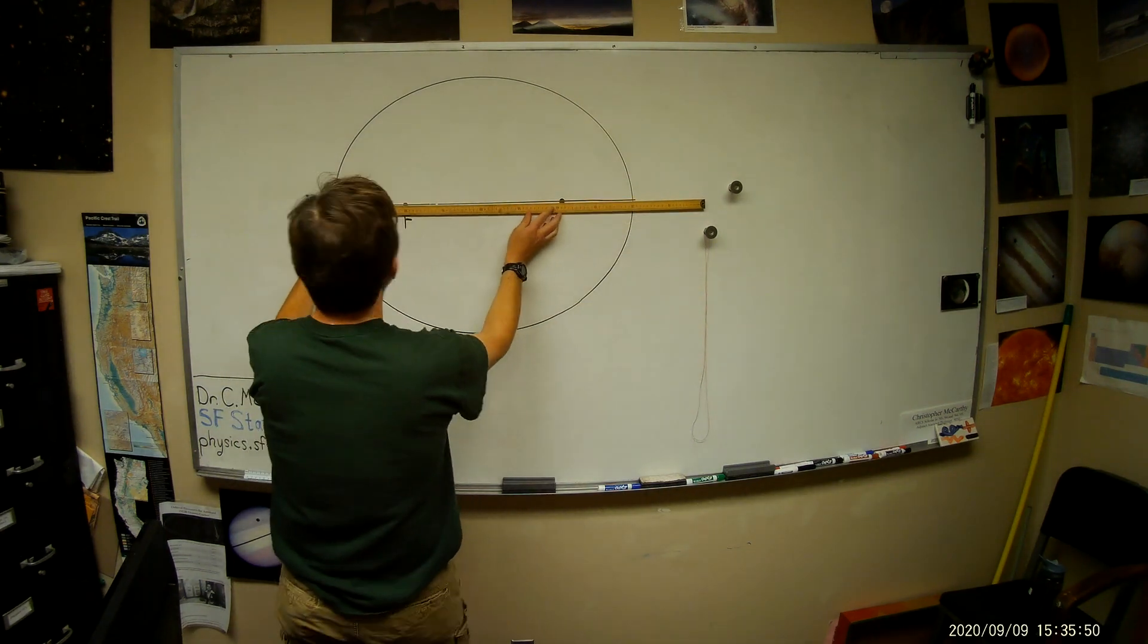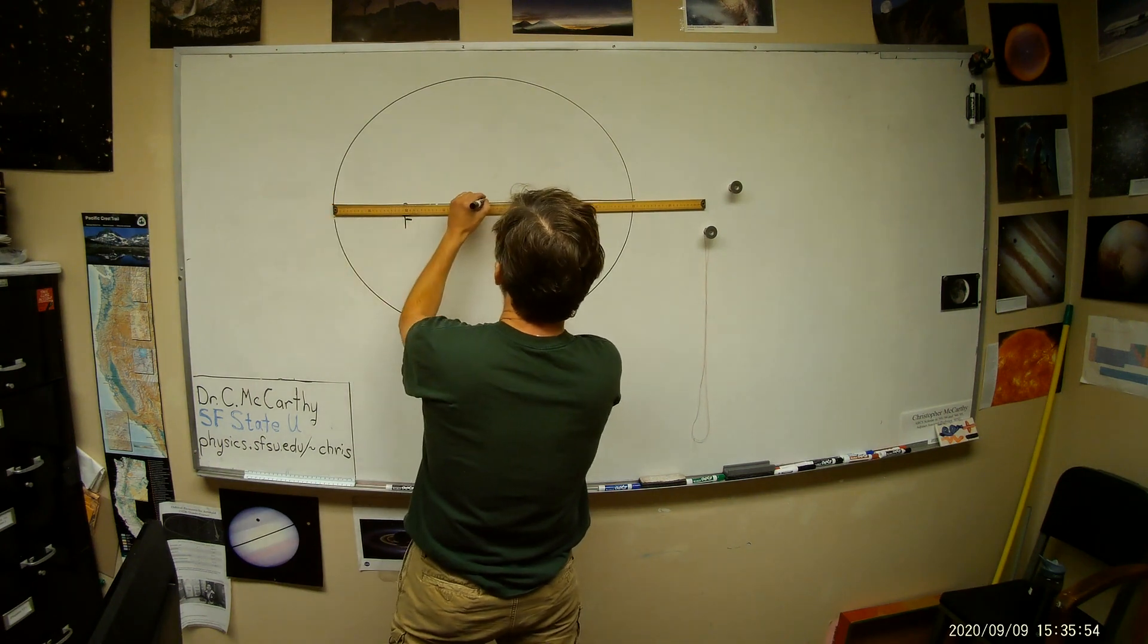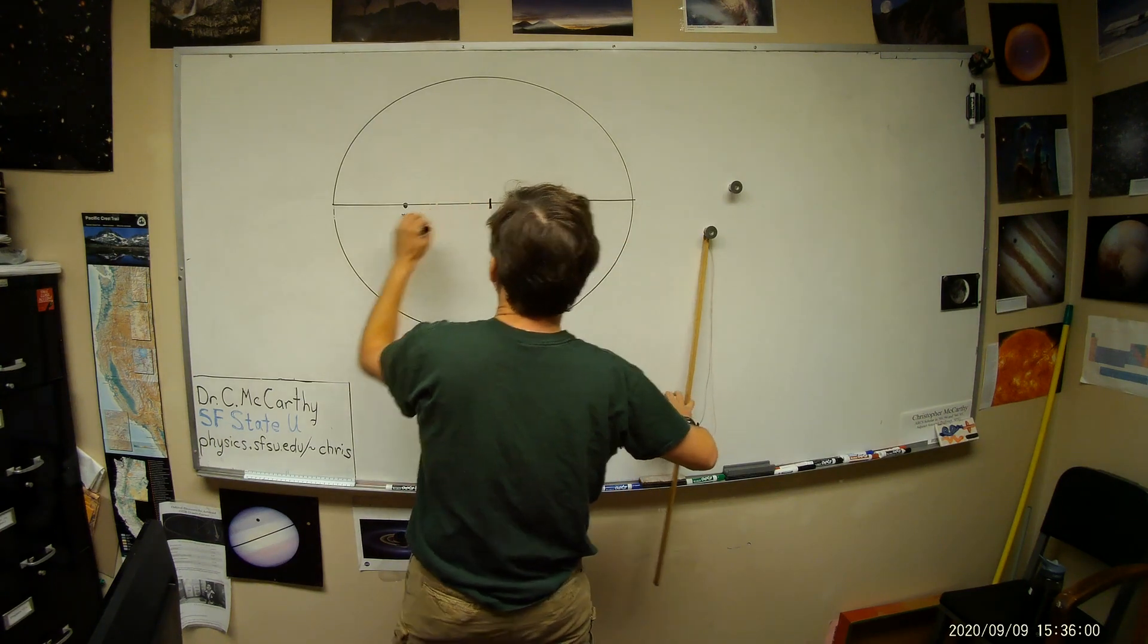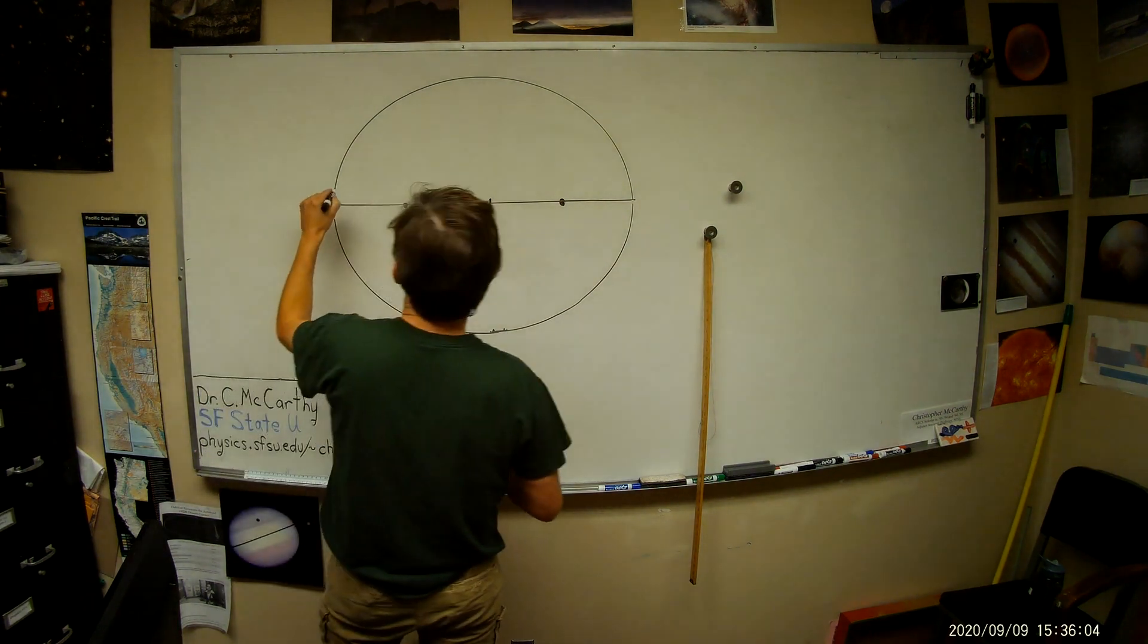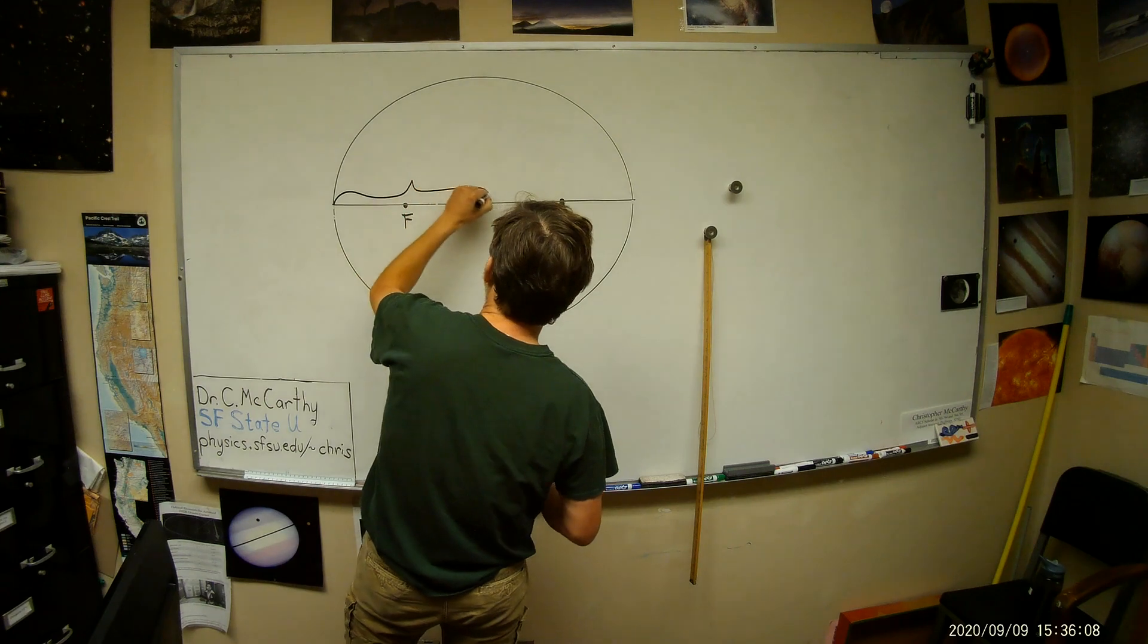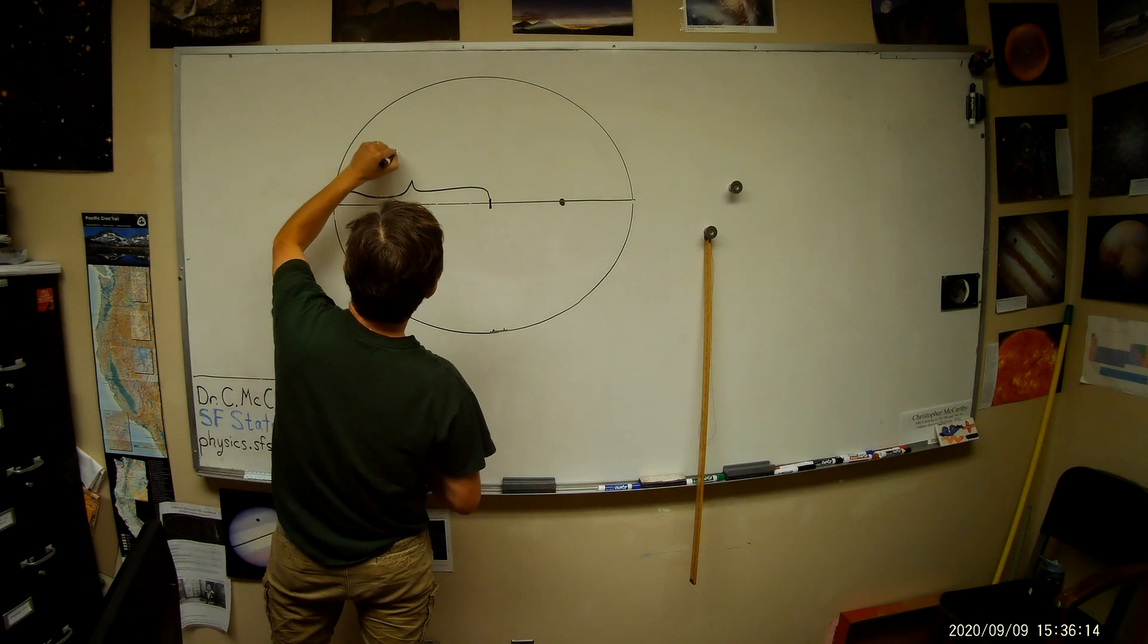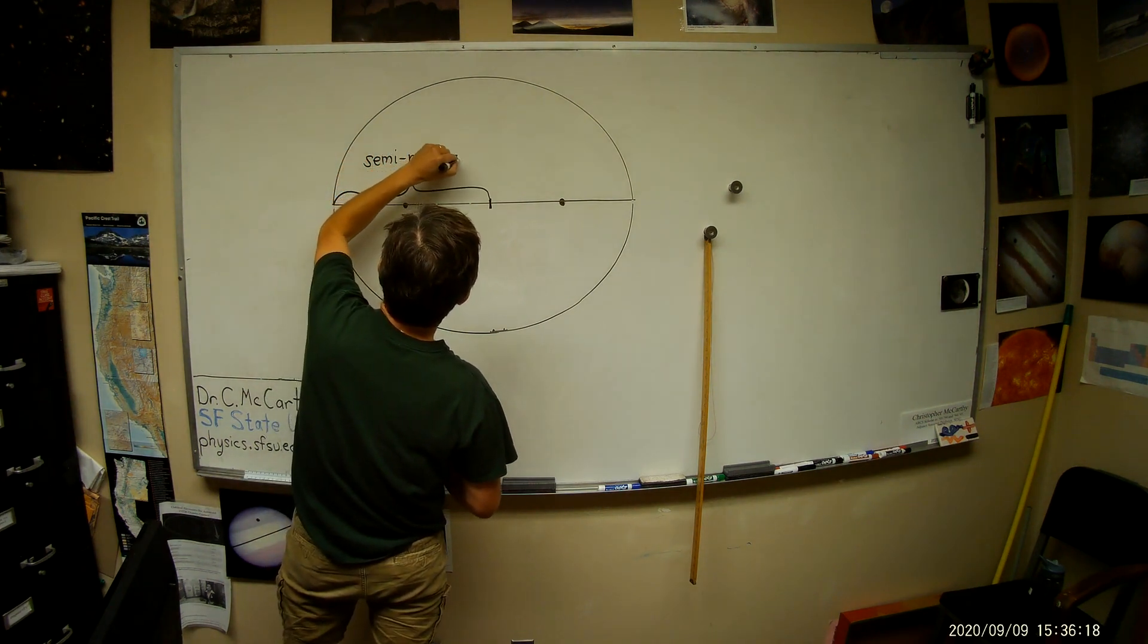And from the central point, we'll take half of that major axis. Here's the center point. And if this is the major axis, then the radius of this ellipse is called the semi-major axis. And it's half of the major axis. So that's called the semi-major axis.